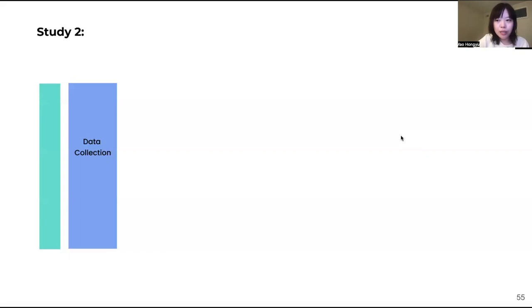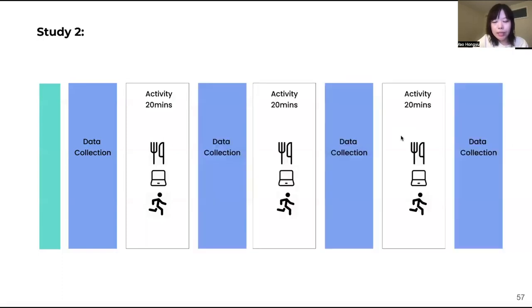Now, let's move to study two. This study is aiming to evaluate the longitudinal performance of EITPose. For each of the users, they will first be invited to record one session of data. After that data collection, they were asked to have a 20-minute activity gap without taking off the band, during which they can do whatever they like, such as eating, typing, and walking around. Altogether, we have four sessions of data collection and three activity gaps.